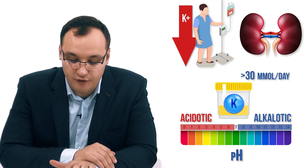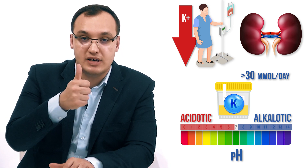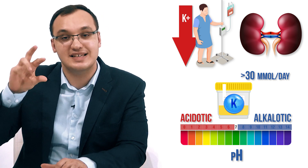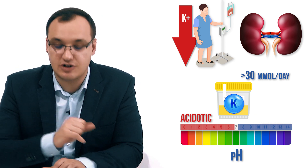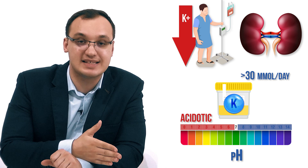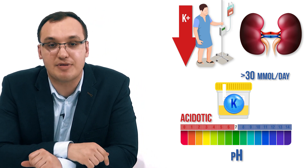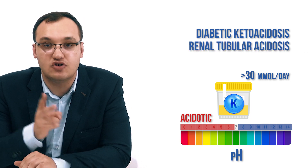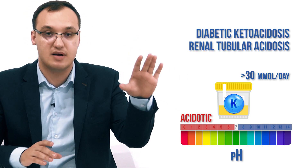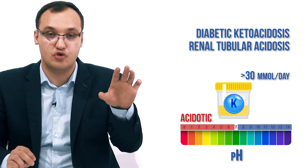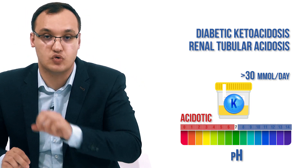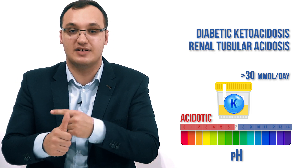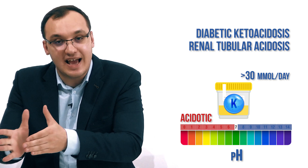If we have low potassium in the blood and high potassium in the urine, we know it's kidney-related, and we add the acid-base status. If the patient is in an acidotic state — pH less than 7.35 — then it could be diabetic ketoacidosis or renal tubular acidosis. Both of these conditions present with low blood potassium, high urine potassium, and acidosis.